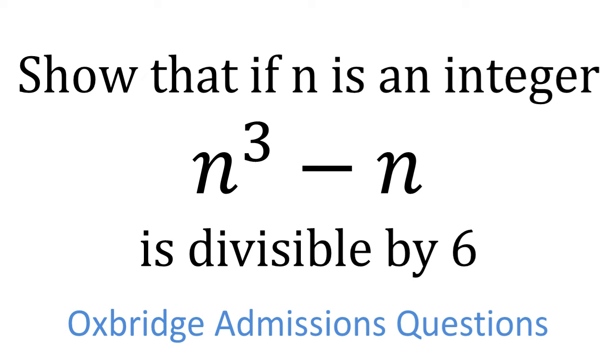In this Oxbridge admissions question we're asked to show that if n is an integer, n cubed minus n will always be divisible by 6. So we've got n in the integers and here's our expression n cubed minus n. The first thing I notice is that both of those terms are multiples of n, so let's factorise that out and we get n lots of n squared minus 1.